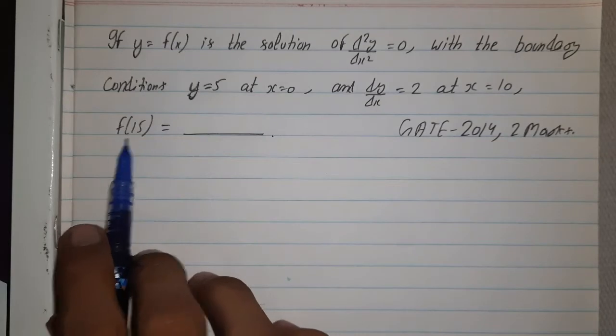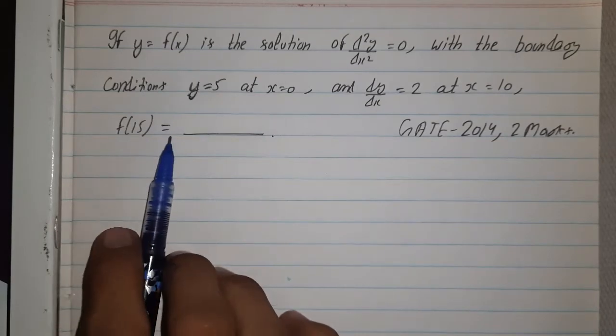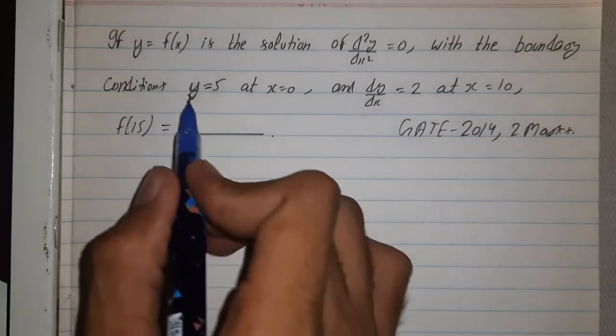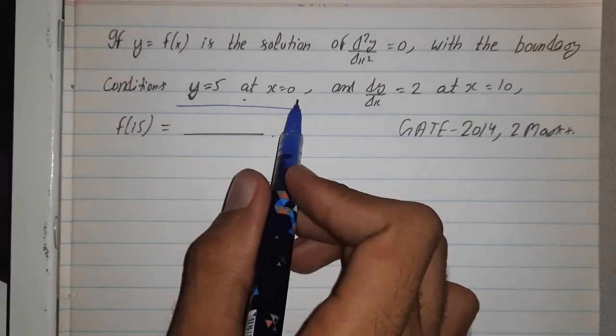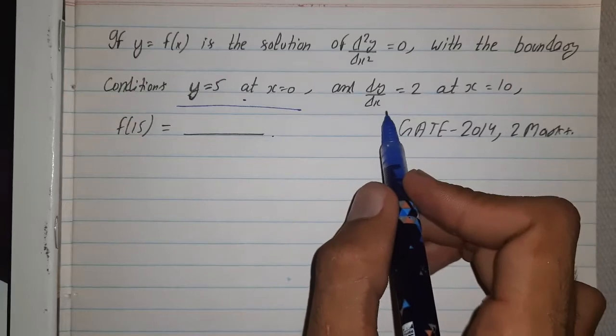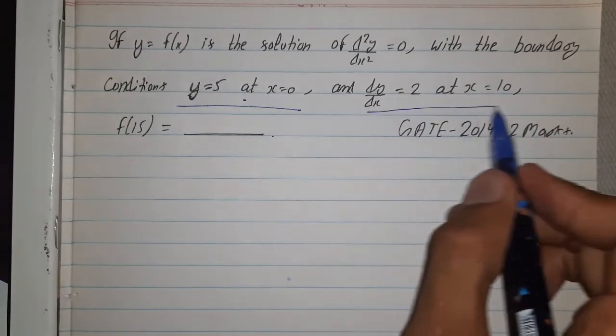We have to find the value of f(15). So we are given with two conditions. First condition is y = 5 at x = 0 and second condition is dy/dx = 2 at x = 0.